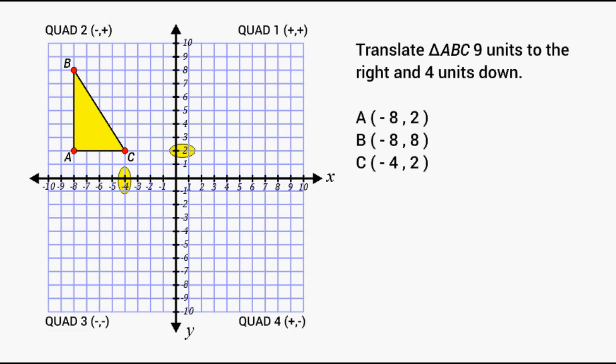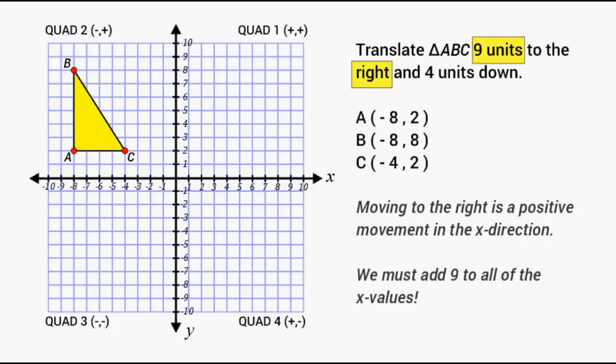Now we are being asked to translate our triangle nine units to the right. Any movement to the right on the coordinate plane is a positive movement in the x direction. That just means we have to add 9 to all of our x values.